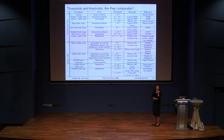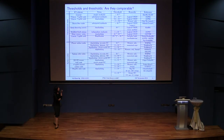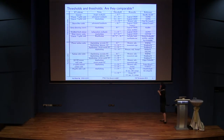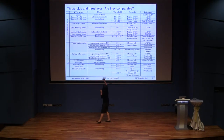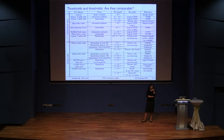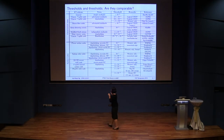I've put up a lot of the representative threshold calculations — fault-tolerance noise thresholds that people have done over the years. The top half of the table are concatenated codes; the lower half are surface codes. Within each category there are many variants with different noise descriptions. The threshold number should be thought of as the probability of error per gate: if you can get your probability of error per gate below that number, you are in business and will be able to do fault-tolerant quantum computing, at least according to these papers.